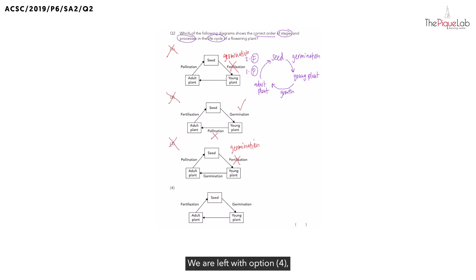We are left with option 4, and we know that is our correct answer. But let's just go through the processes. Do the seeds go through germination to become a young plant? That is correct. And what happens to the flowers found in the adult plant?